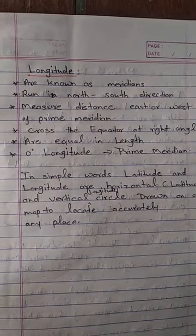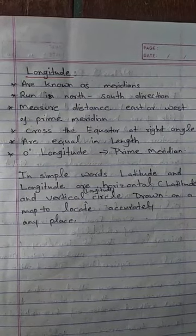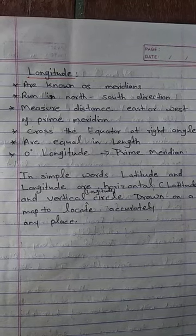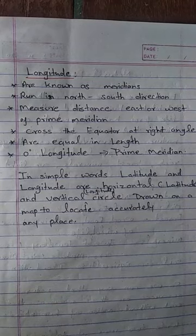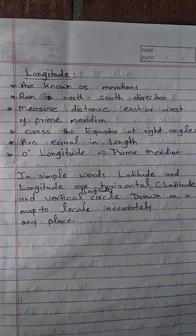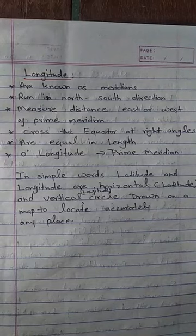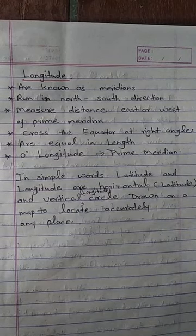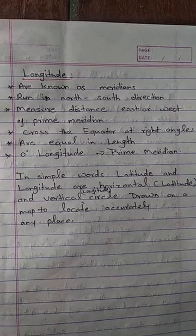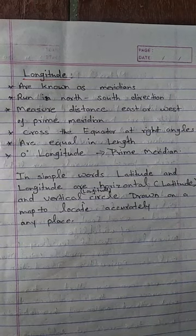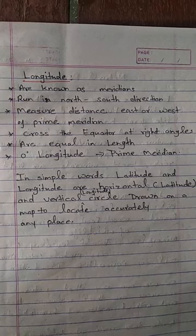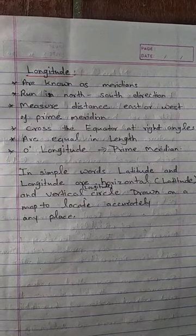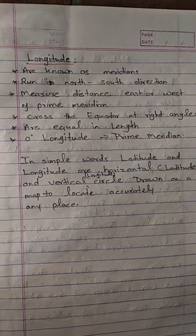Now, longitude. Longitudes are known as meridians. They run in a north to south direction and measure distance east or west from the Prime Meridian. Zero degree longitude is known as the Prime Meridian, and we divide the globe vertically into equal parts. It is a vertical line.